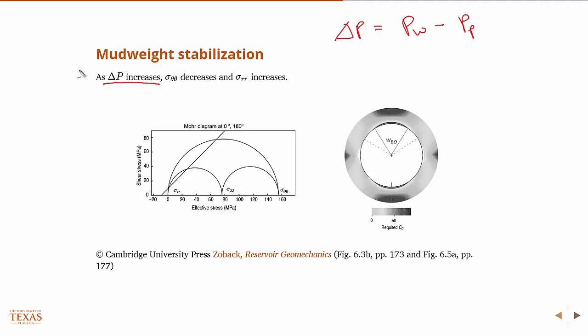and as delta P increases, then if you look at those equations, you could see that the hoop stress decreases and the radial stress, which is only the difference in the pore pressure, sigma RR, increases, because the radial stress is delta P. So if I'm increasing delta P, I'm increasing sigma RR.